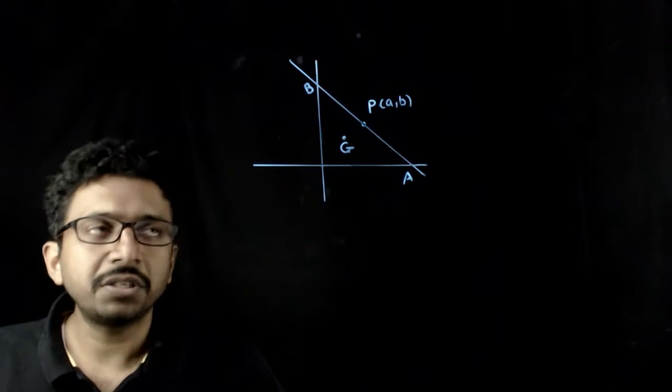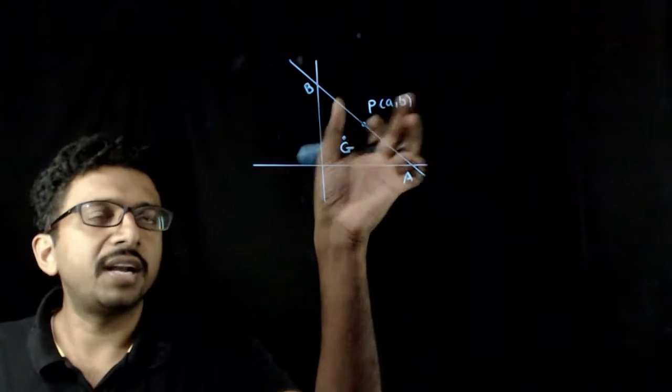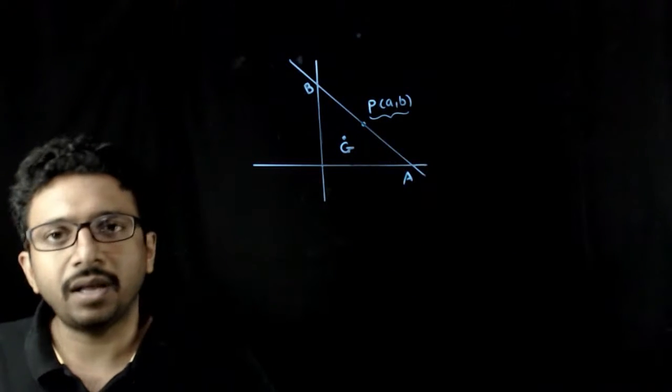So, welcome students. So, in this question you are given that a variable straight line passes through the point a comma b.